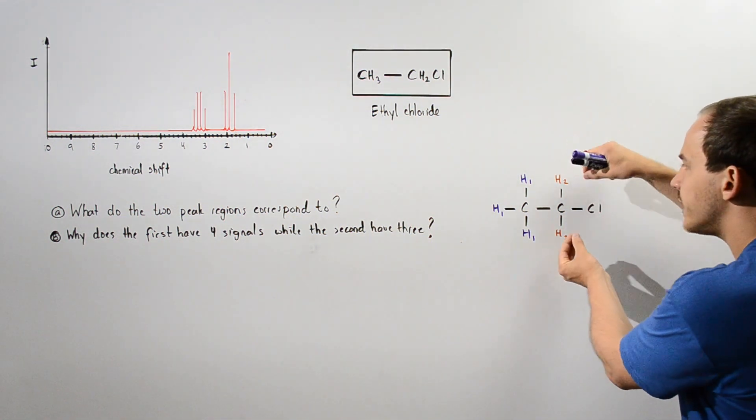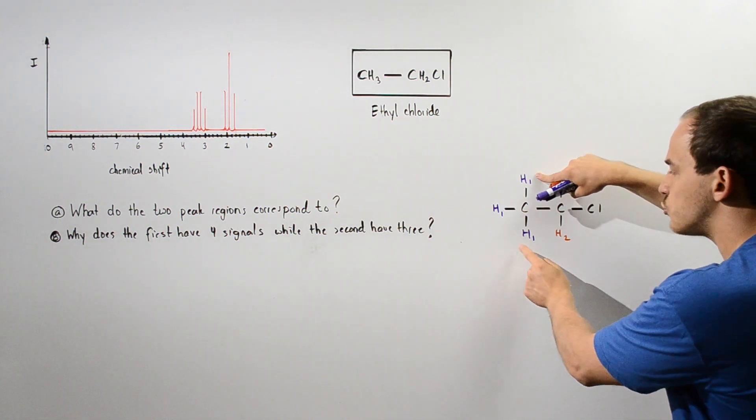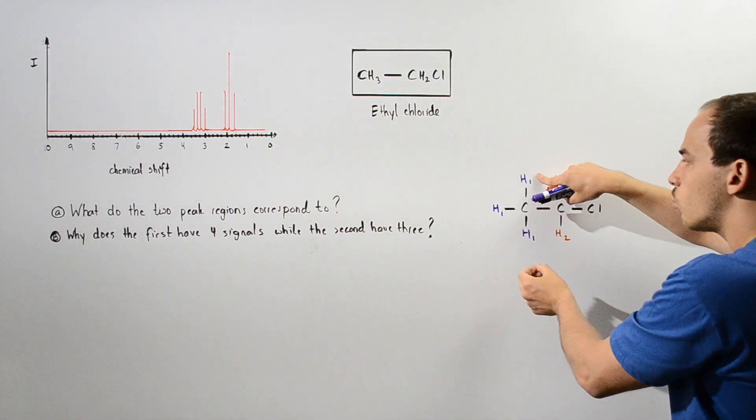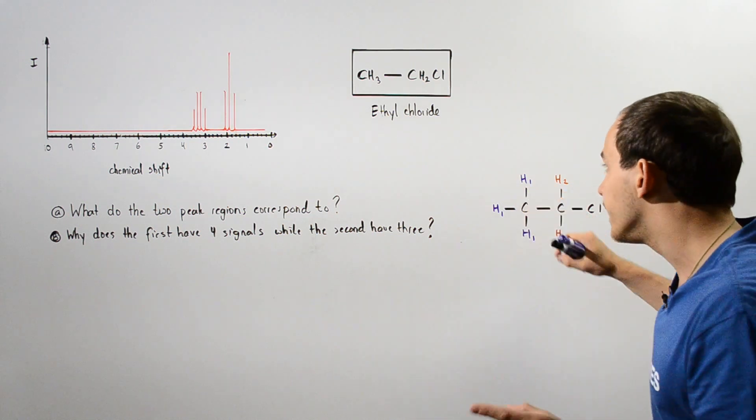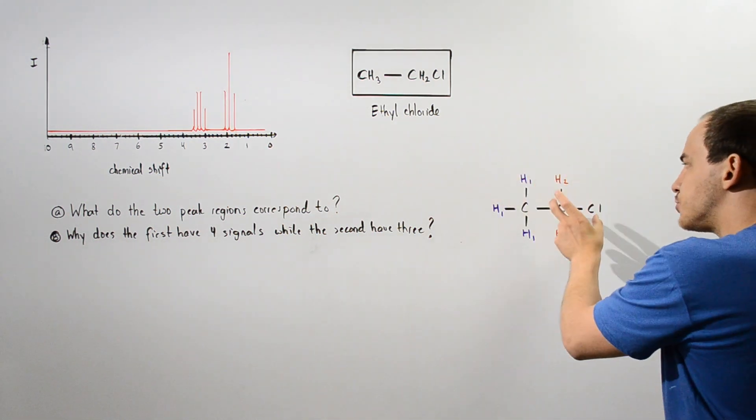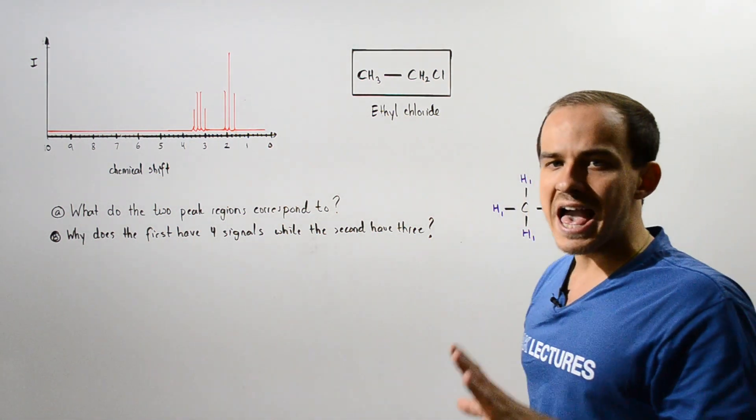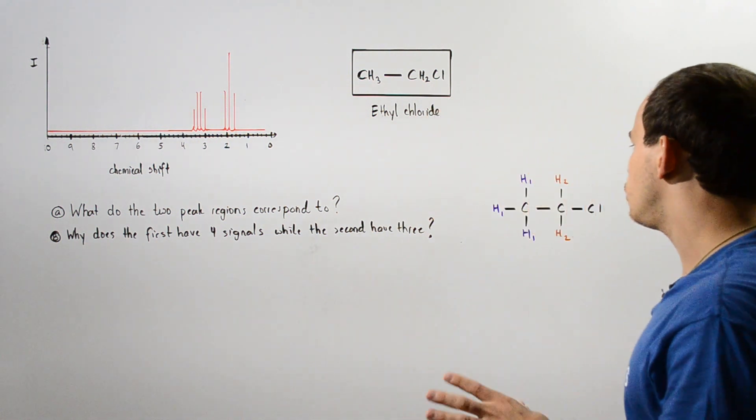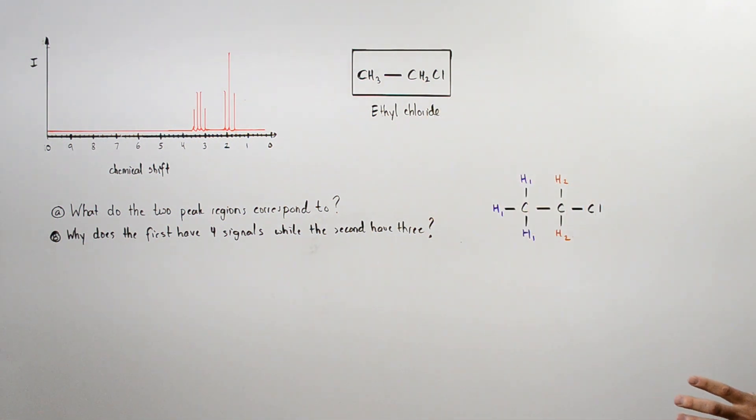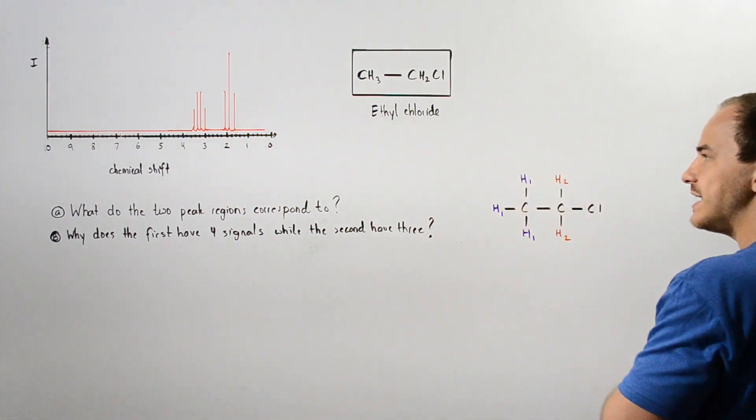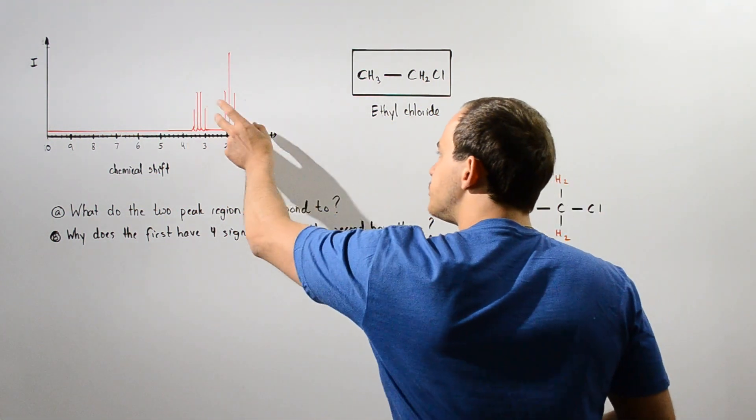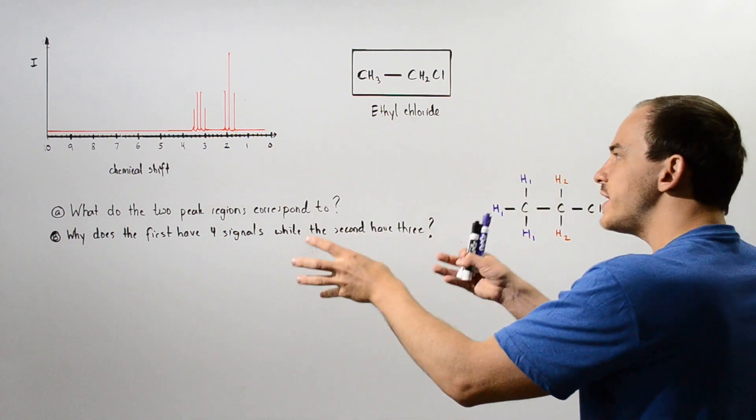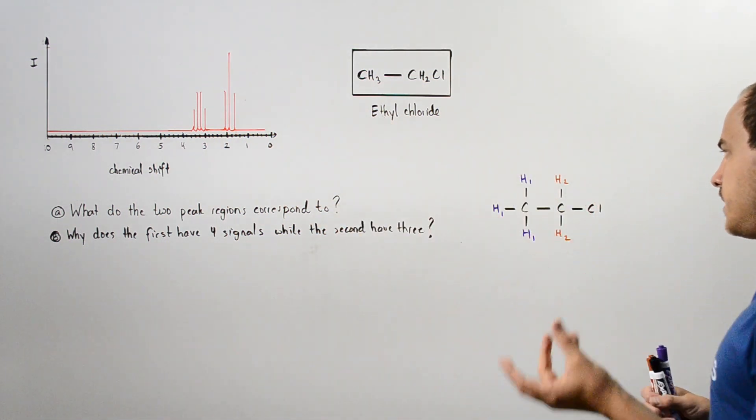Now these H2 are identical and these three H1's are also identical with respect to one another, but H1 and H2 are two different H atoms because they are found in two different chemical environments. Now the question is which one of these H atoms correspond to which one of these two regions of multiple peaks.